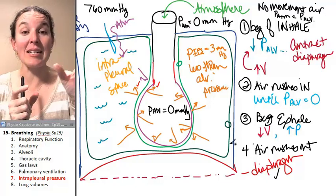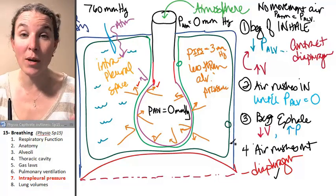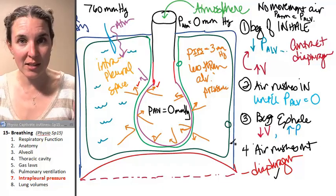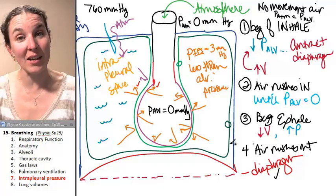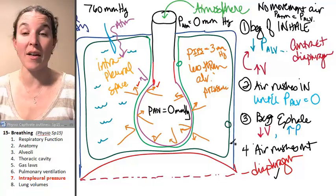The bottom line is that the difference, the fact that intrapleural pressure is always lower than alveolar pressure means that in a healthy system the lungs stay inflated and they literally collapse if that is not the case anymore.